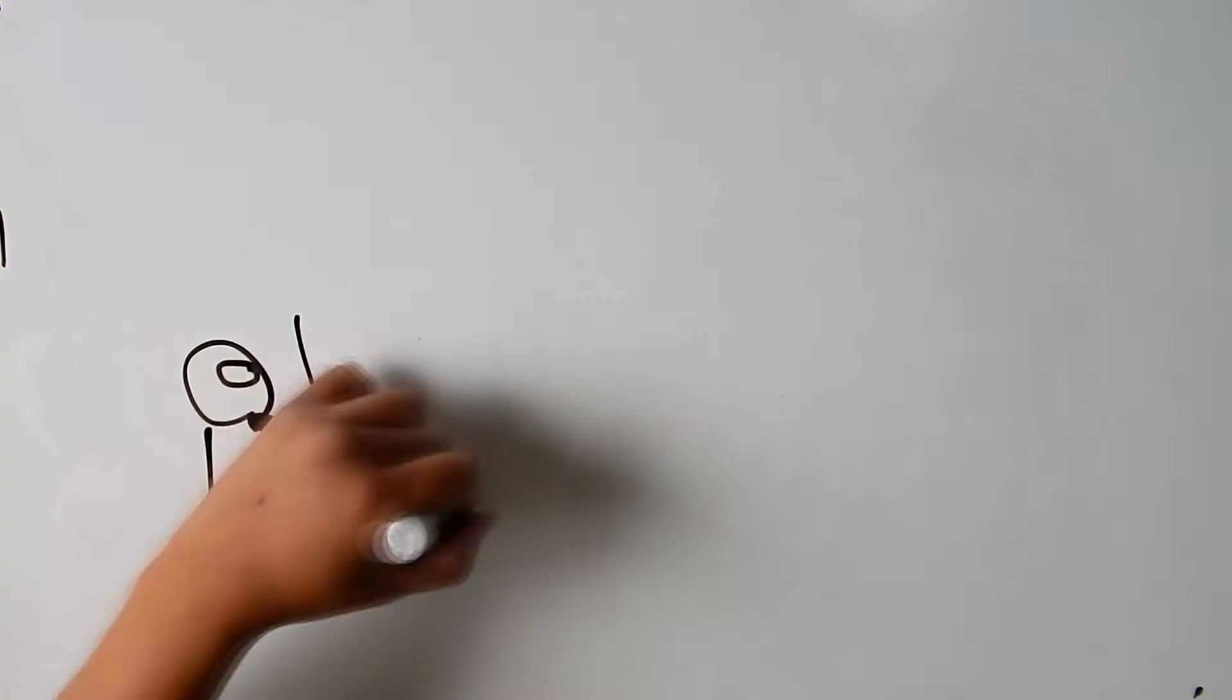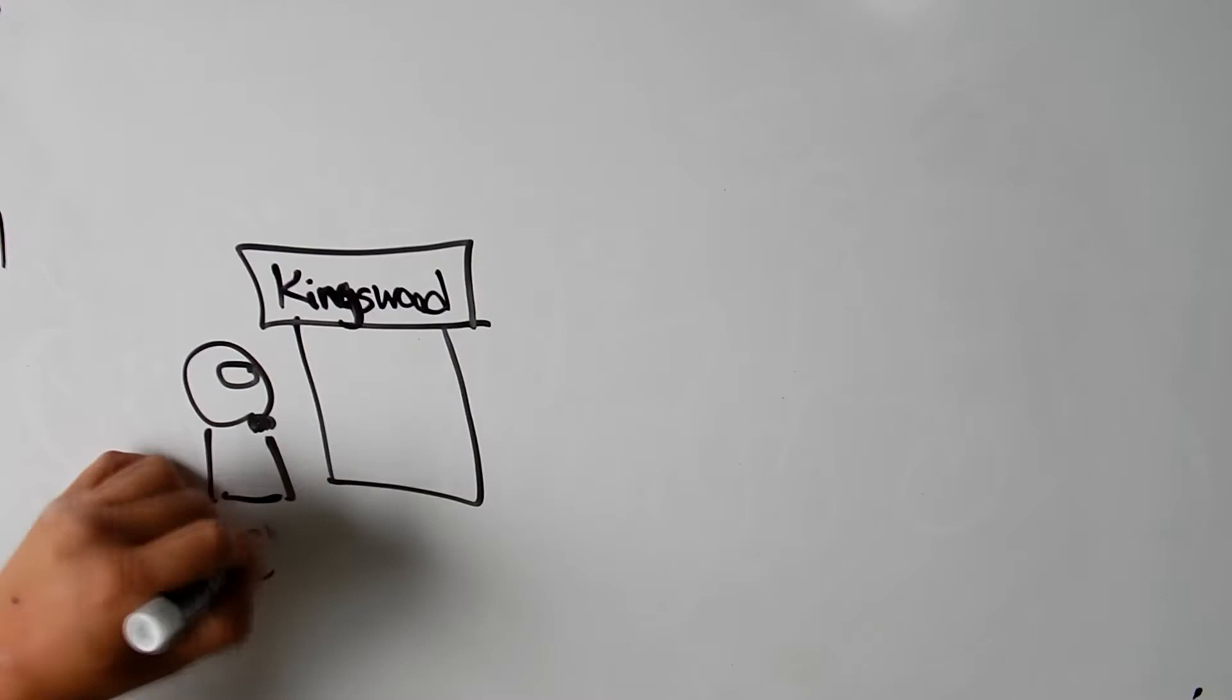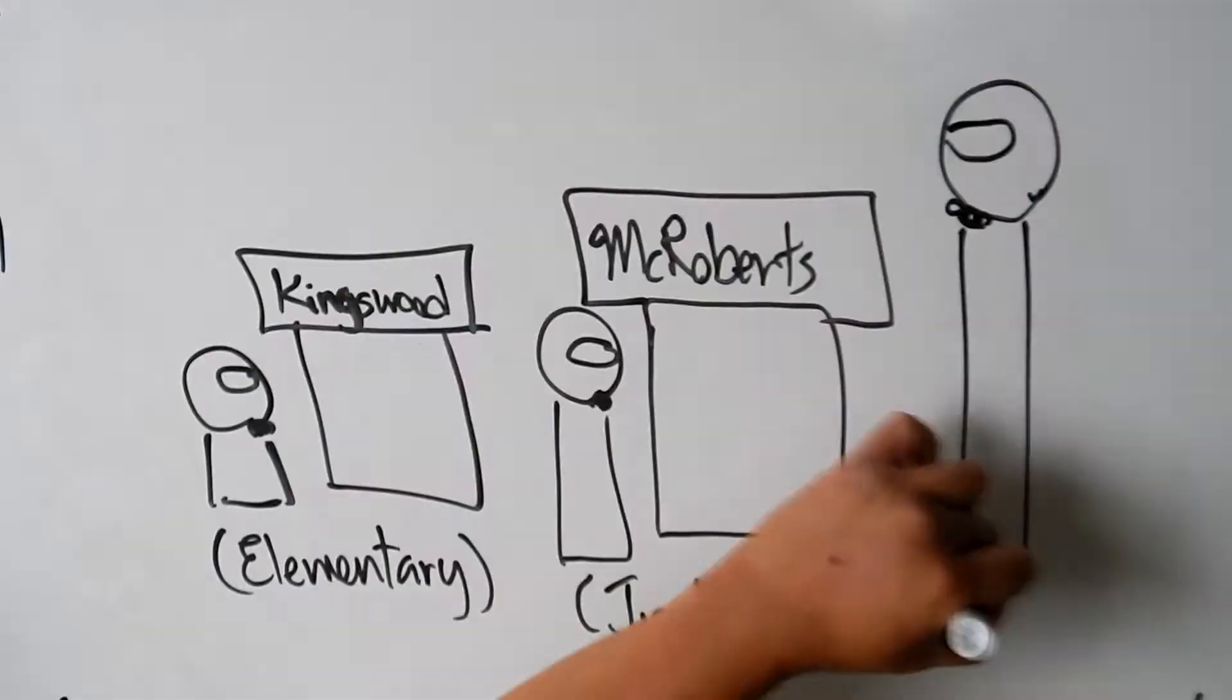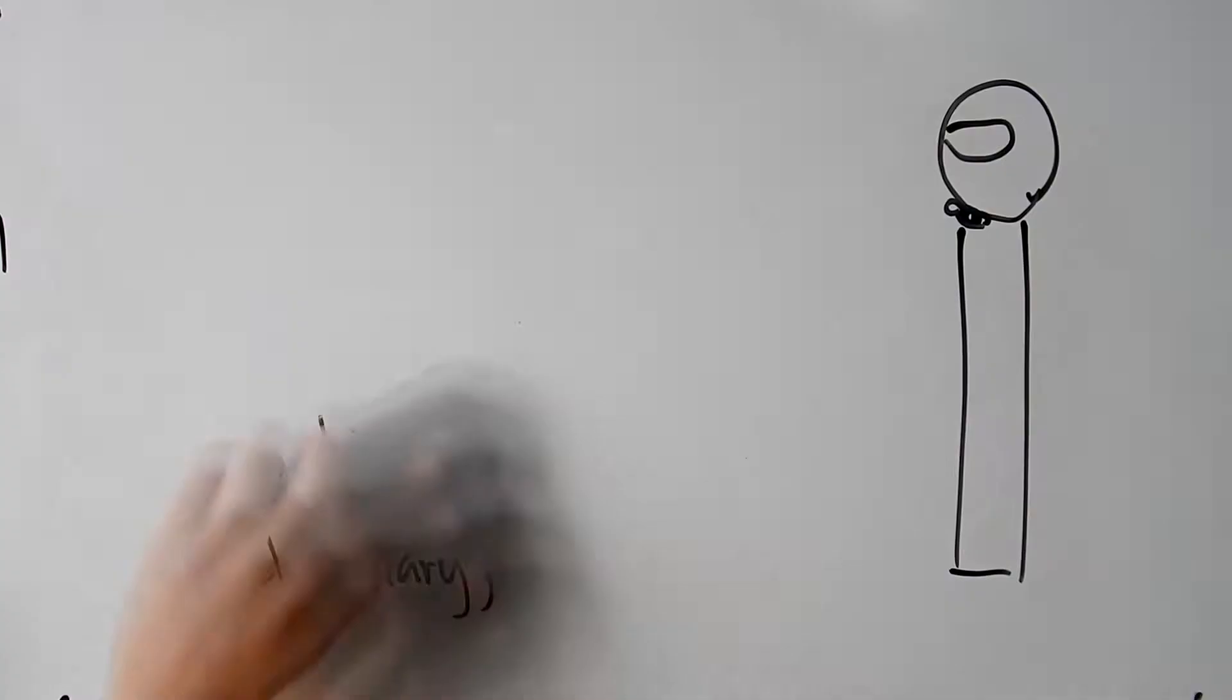I ended up growing up in Richmond. I went to Kingswood Elementary, Mike Roberts for junior high, and McNair for senior high. Yes, back in my days, there were junior high and senior high in Richmond.